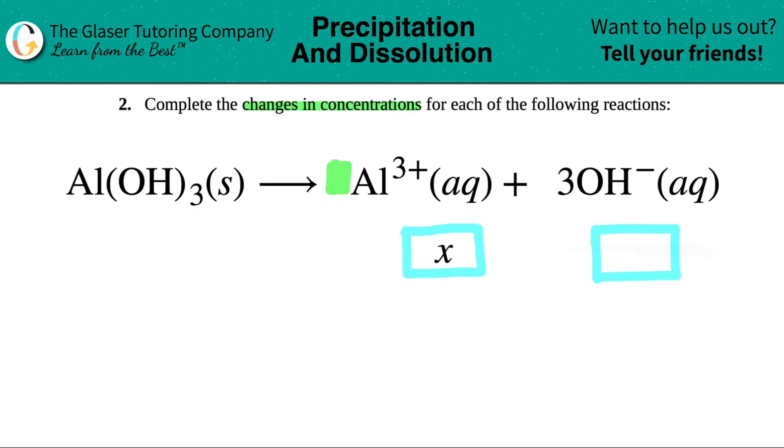We have one aluminum 3+ and then I see a big three in front of the hydroxide. This is why the aluminum is only going to change by x, because you always stick the coefficient in front of your variable. This would technically be one x.